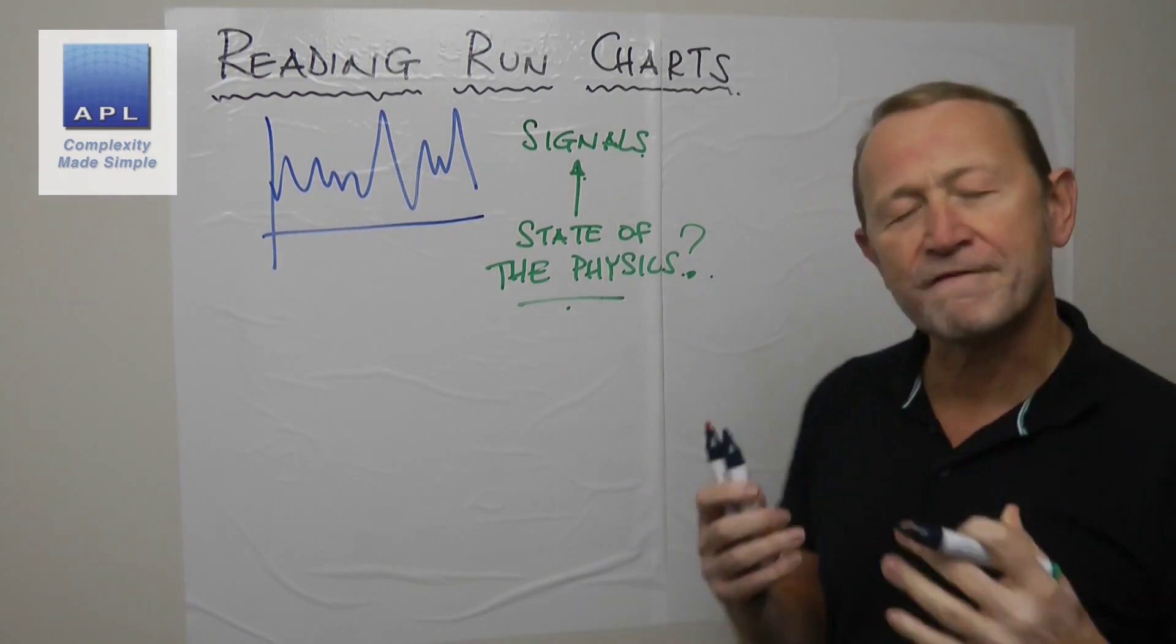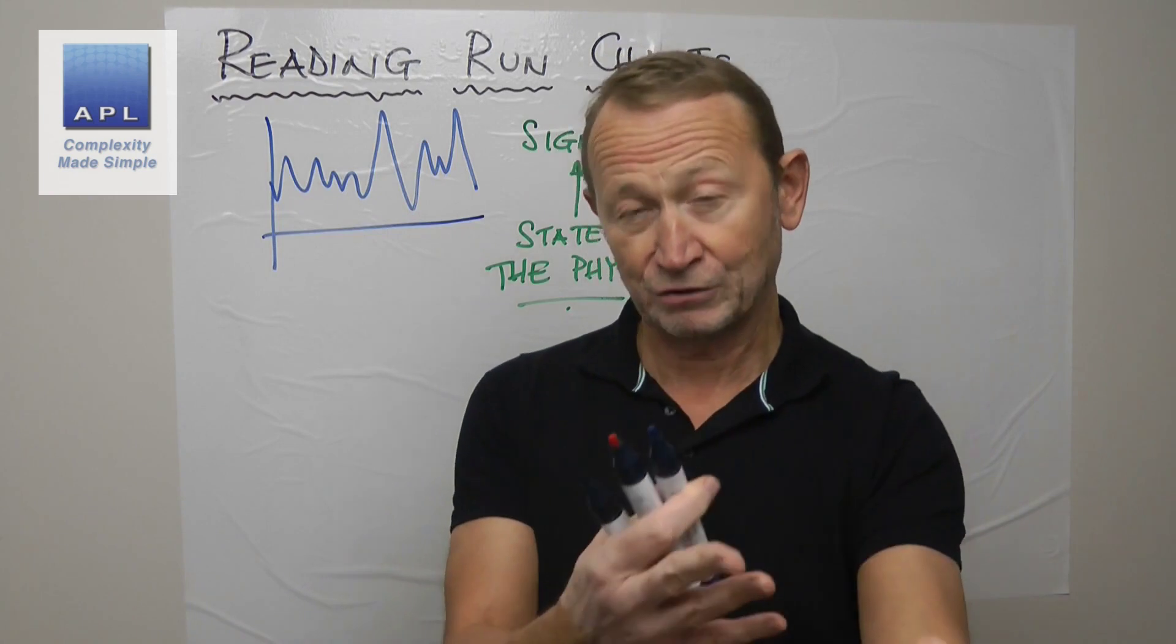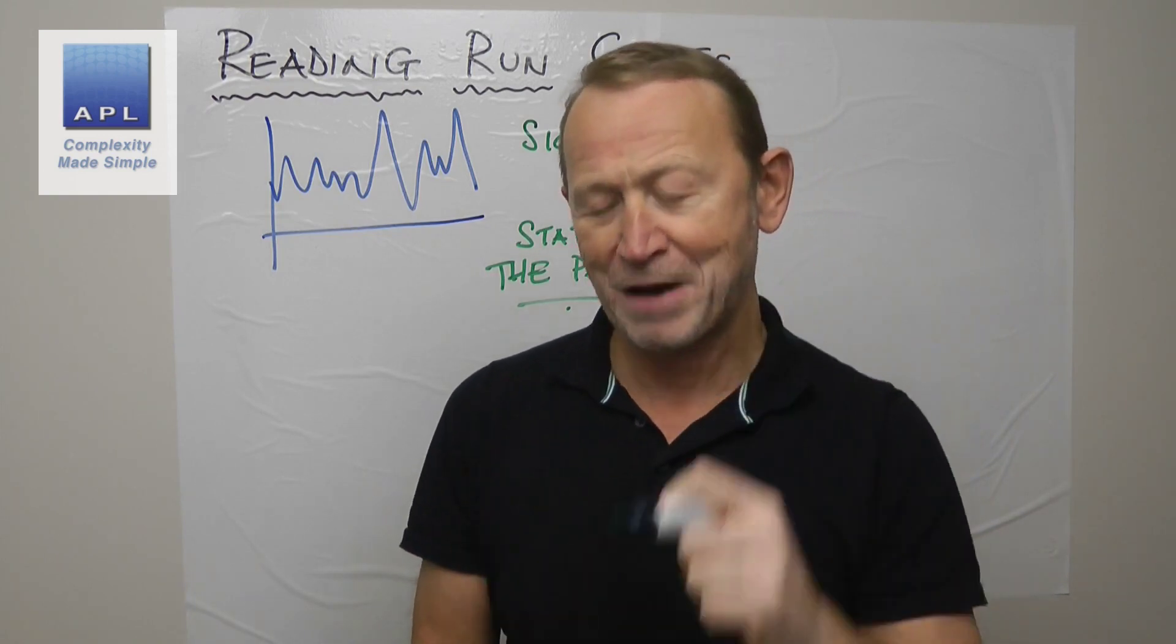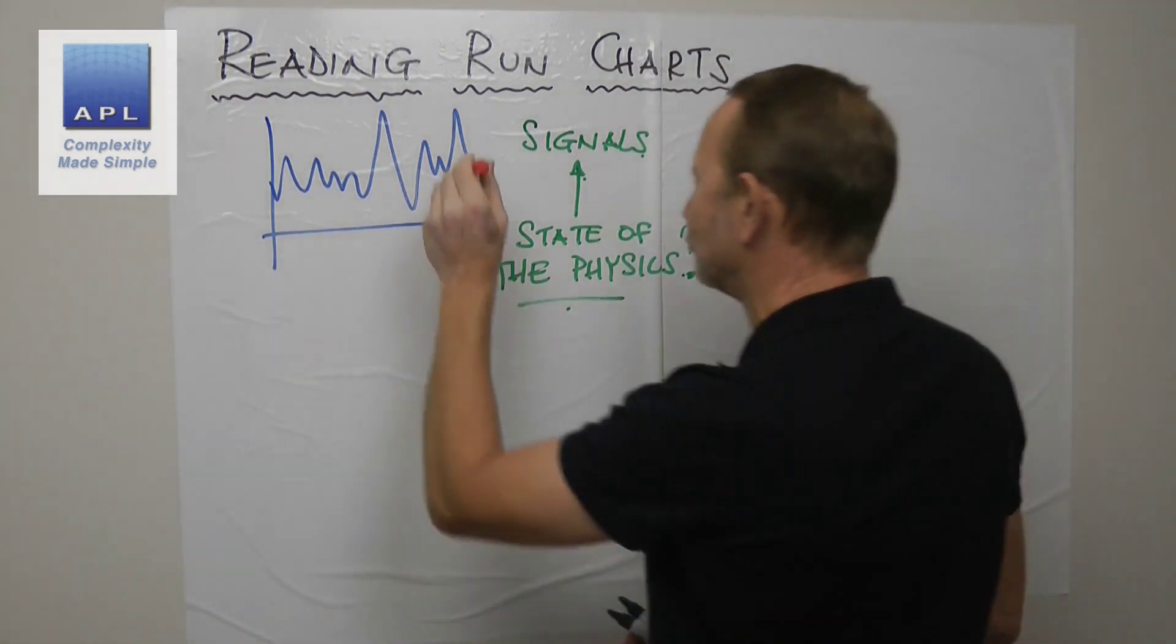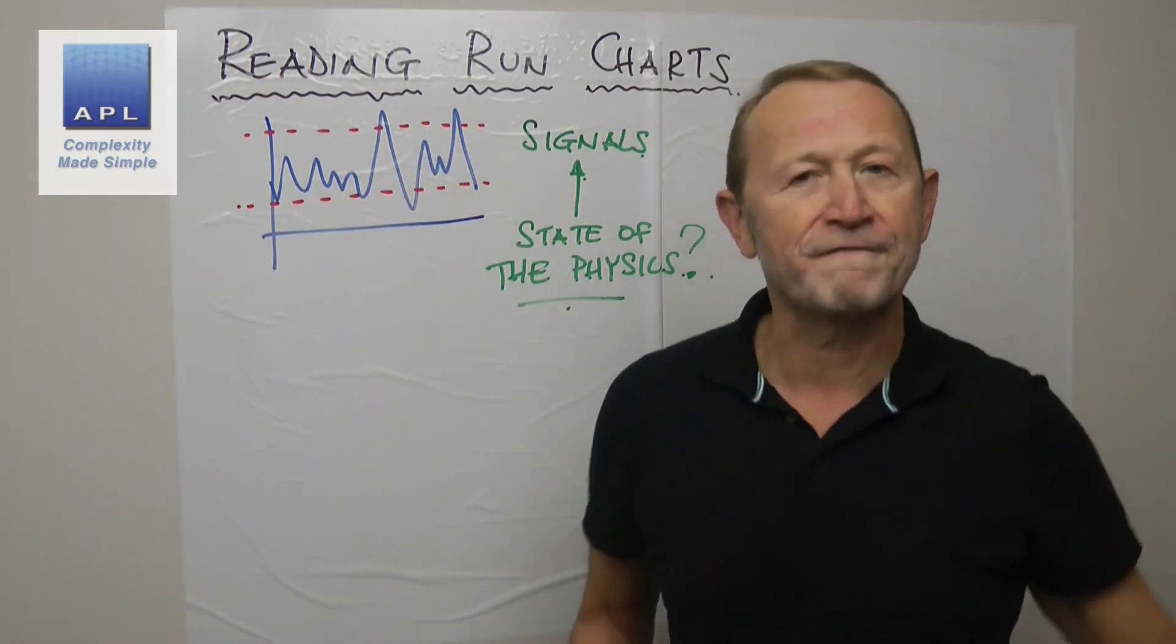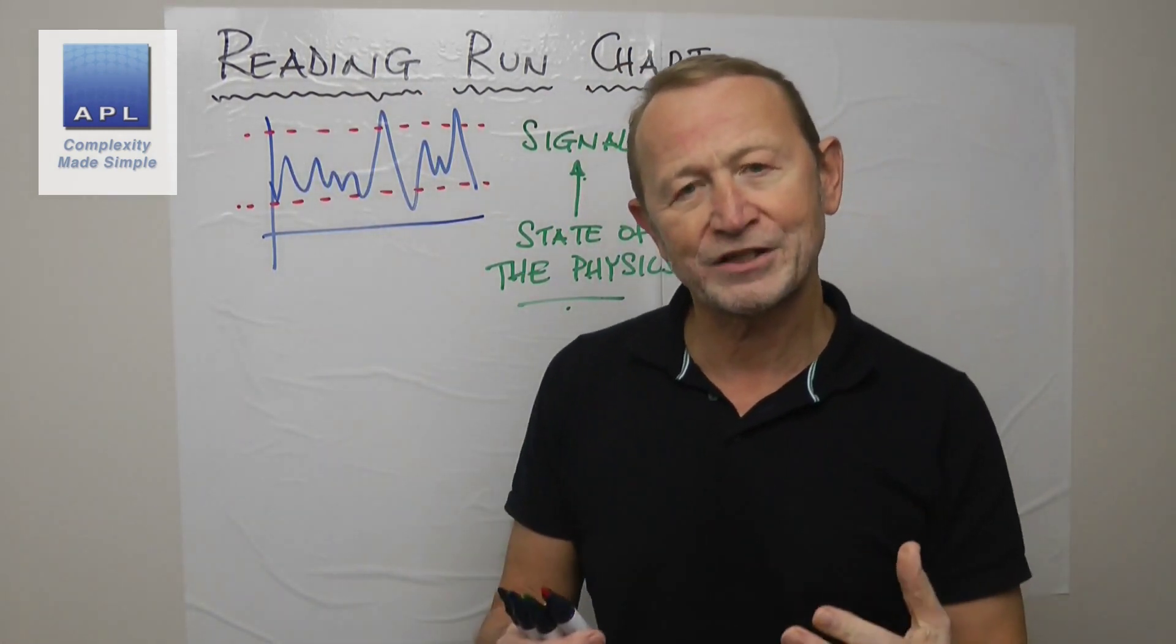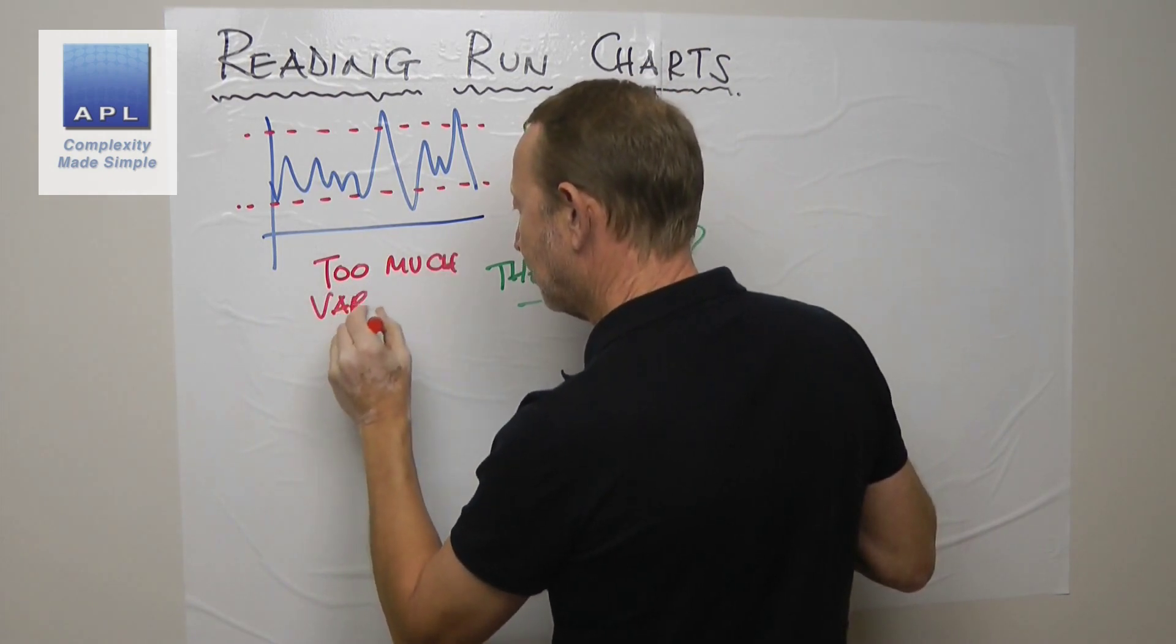So let's look at some basic signals that tell me the state of the physics. What's the state of the physics of that problem? Clearly I'm making defective results. What's the state of the physics? It's simple - too much variability.